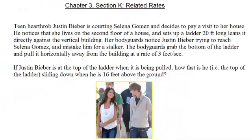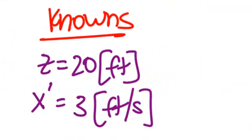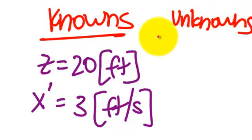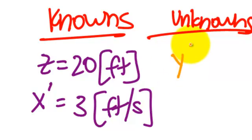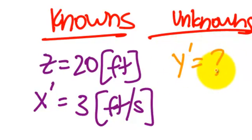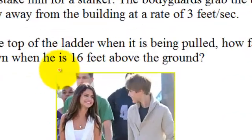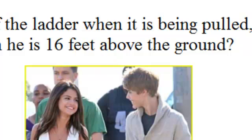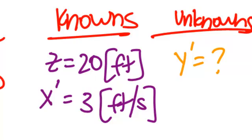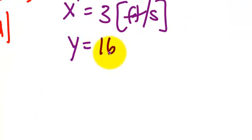Let's see if there's any other quantities we can see in the problem. Justin Bieber is at the top of the ladder when it's being pulled. How fast is he sliding down when he's 16 feet above the ground? We do not know the rate at which he's sliding down. Sliding down is up and down — we're trying to find the y quantity, and again it's a rate. So I'll create a new column called unknowns: we do not know y prime. And the last known quantity is y equals 16 feet.